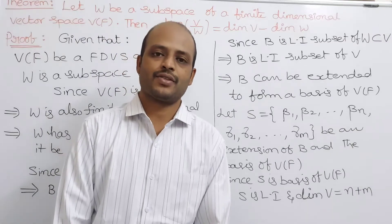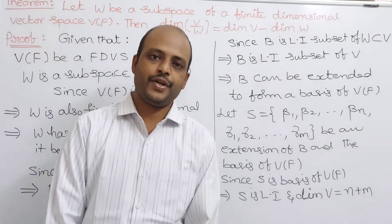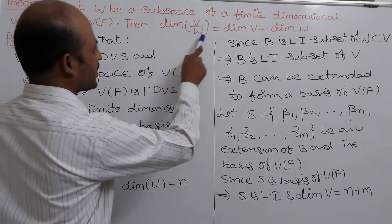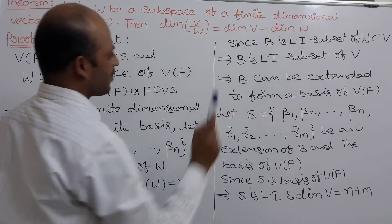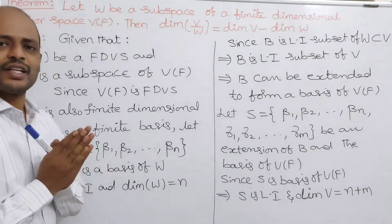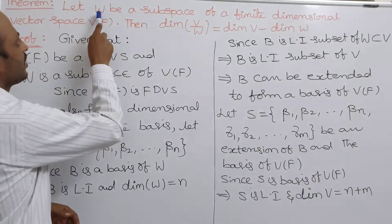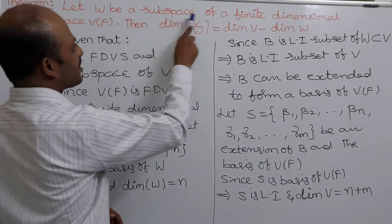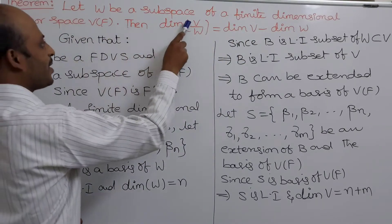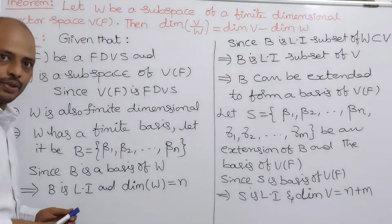Welcome to Sunil Maths Tutorial, Linear Algebra Classes. In this video, we discuss one very important theorem: dimension of V by W equals dimension of V minus dimension of W. This is one of the lengthiest theorems, but it is very important for your end semester examination. Observe the statement: let W be a subspace of a finite dimensional vector space V over F. Then, dimension of V by W equals dimension of V minus dimension of W.